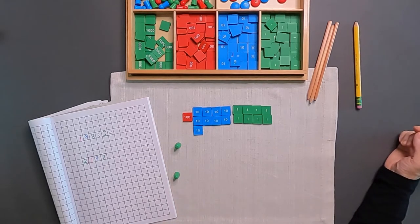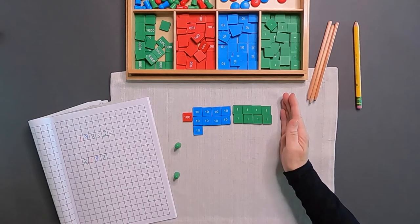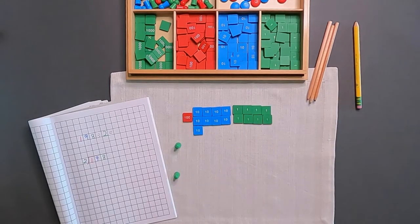When we divide, remember, instead of starting with our units like we do in other operations, we start out with the largest number and we need to make sure that each skittle receives an equal amount.